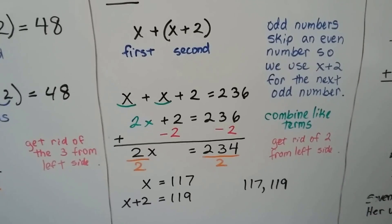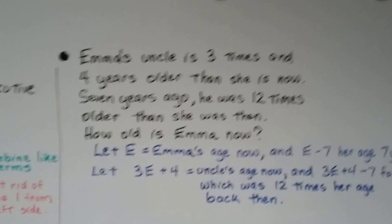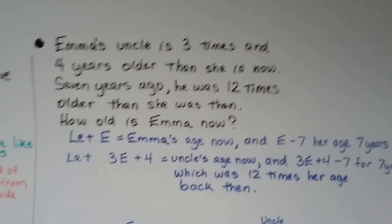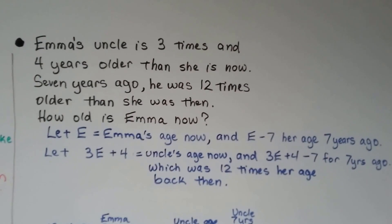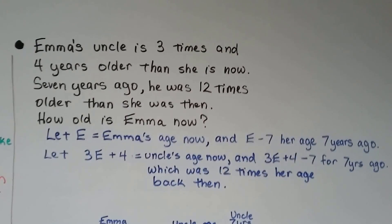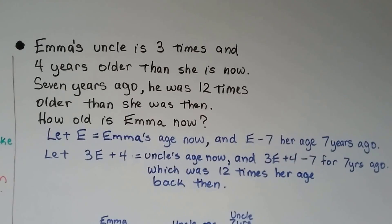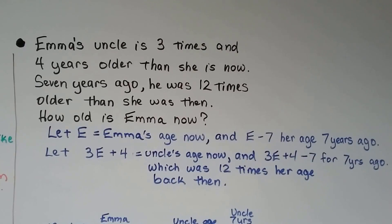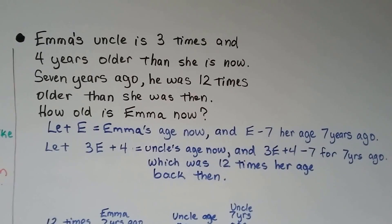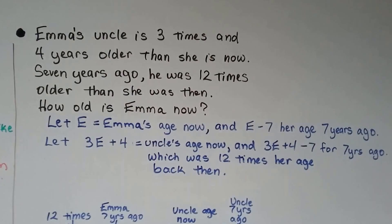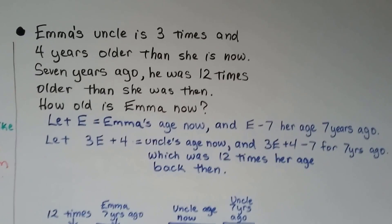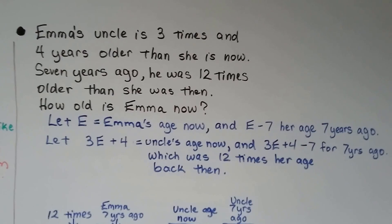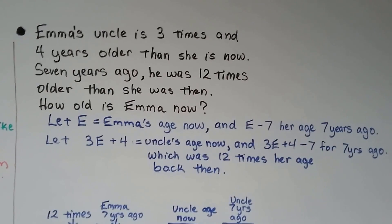This next problem is going to get really wordy, so feel free to go back and watch it again — it's no big deal. Emma's uncle is three times and four years older than she is now. Seven years ago, he was 12 times older than she was then. How old is Emma now? You have to pay attention to the 'then' and 'now' distinctions.